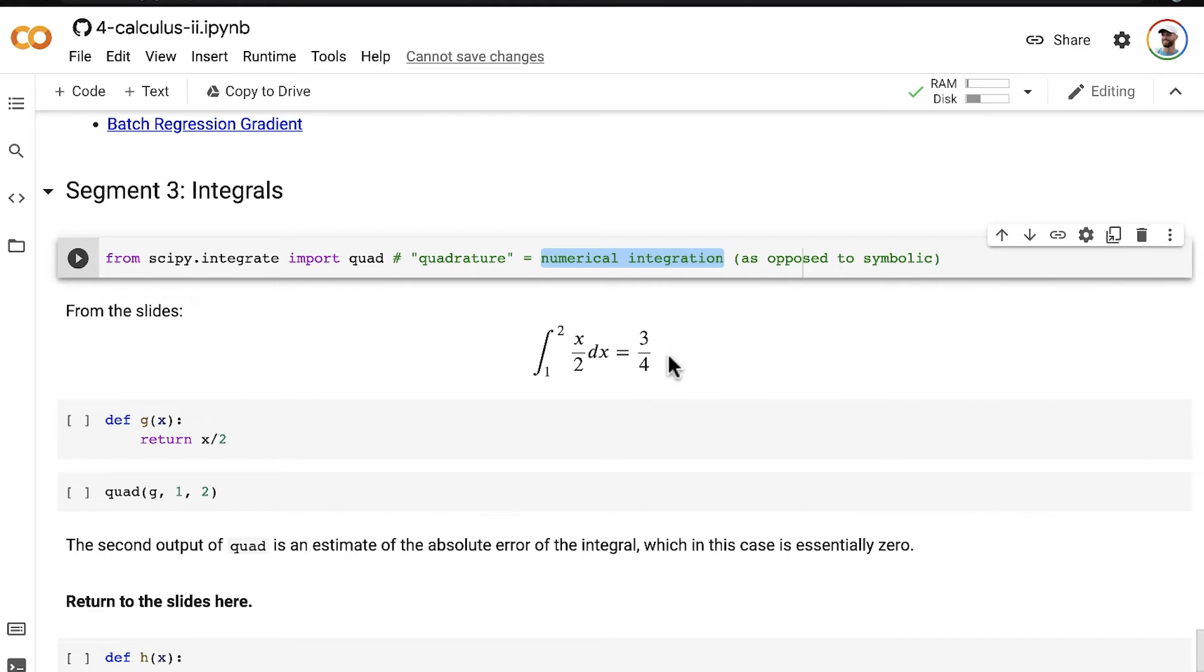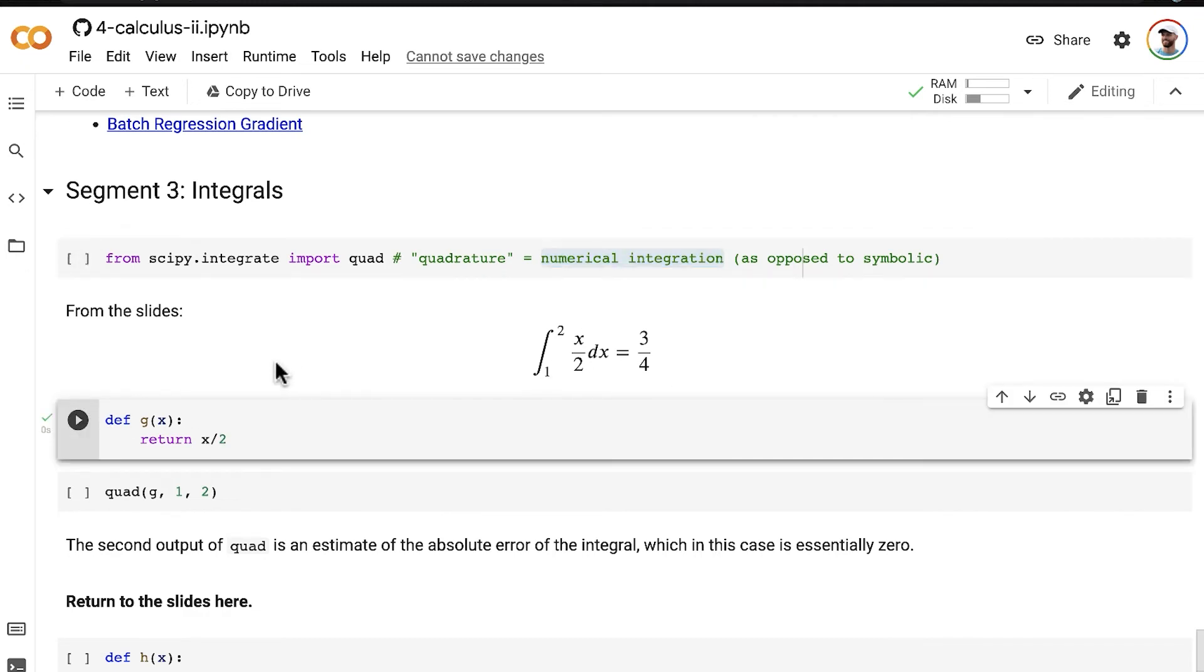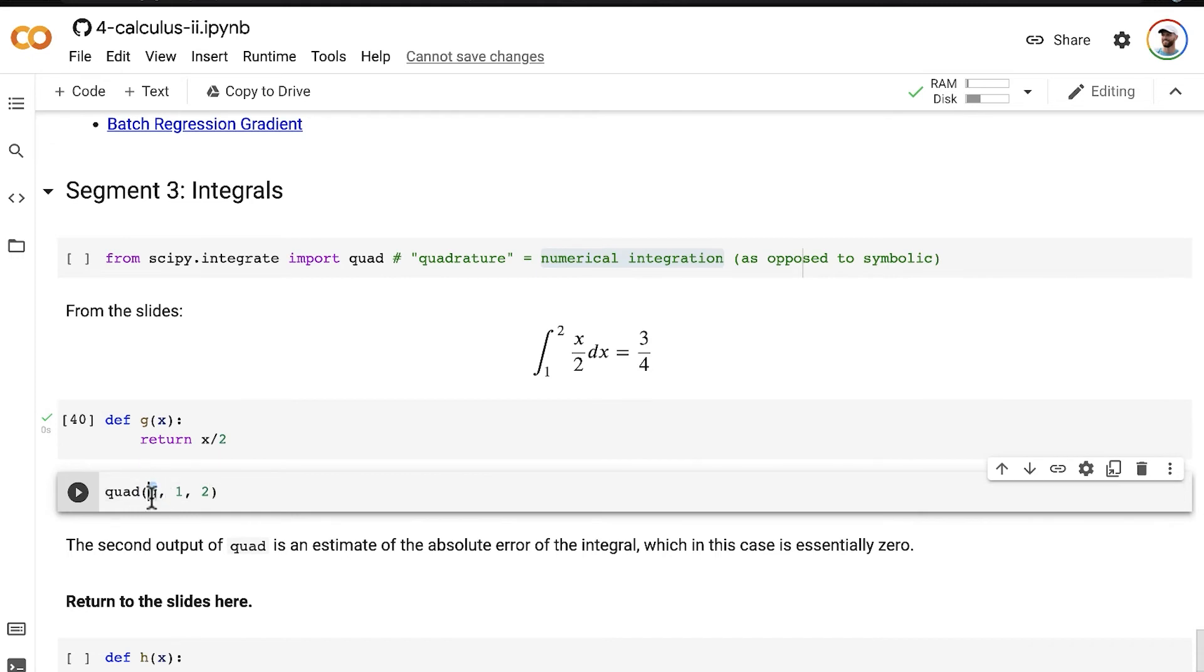So in order to perform this same calculation in code, it's really fast. So we need to define a function, I'm going to call that function g, that contains our function x over 2. So very simply, g returns x over 2.